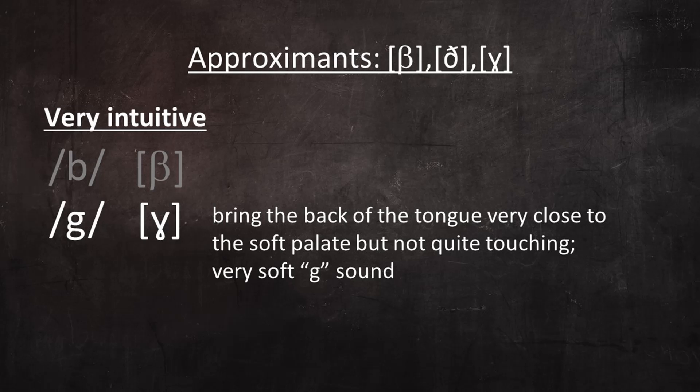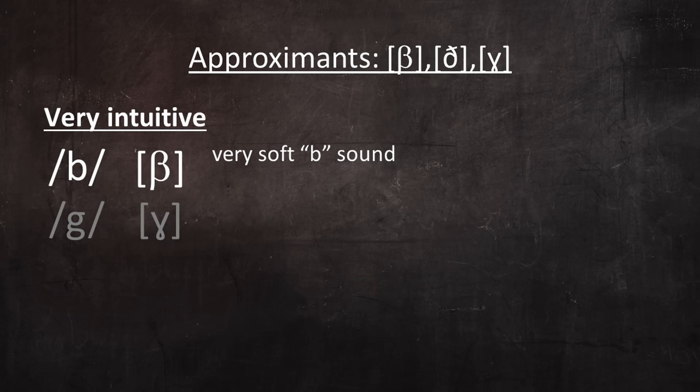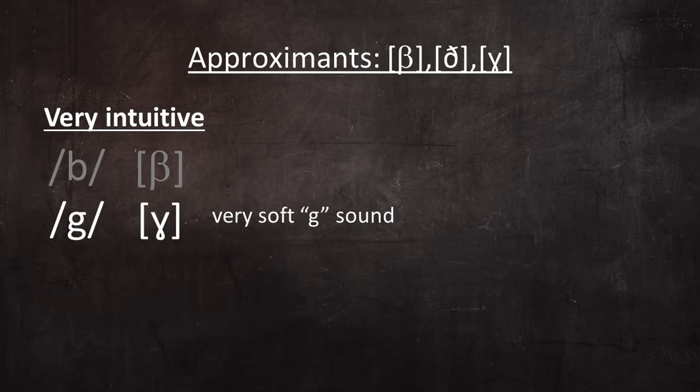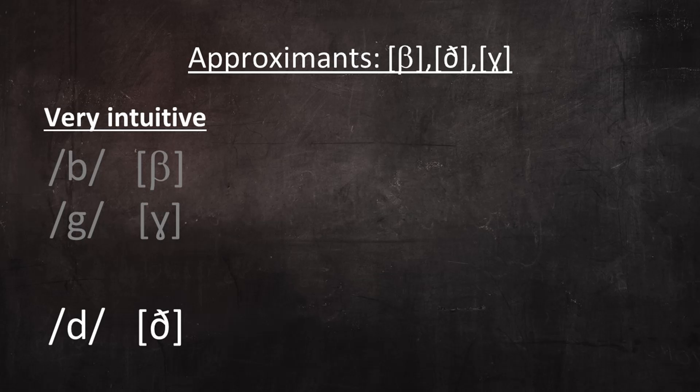Similarly, approximant G is pronounced by bringing the back of your tongue very close to the soft palate, as if you were going to make an ordinary G sound, but not quite. So it's like a very soft G sound. So most of the time, Spanish B is pronounced like a very soft B, and Spanish G is pronounced like a very soft G.